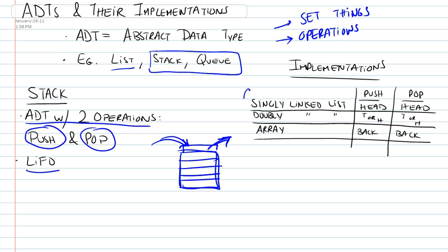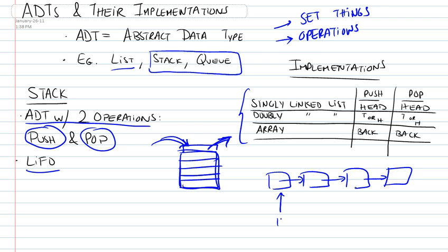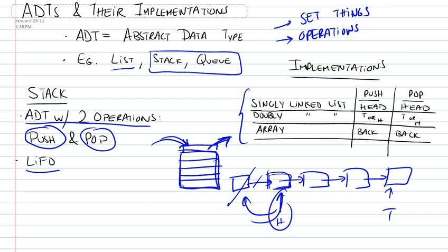The stack is an abstract data type and we could implement it using any of those data structures. For example, with a singly linked list, we would be popping and pushing to the head. So suppose this was the head and this was the tail. If we wanted to add a new element, we would push one here and then move the head to that. And if we wanted to pop one, then we would simply remove this element, remove that pointer, and have the head come back and point at this element. So that's an implementation using a singly linked list.